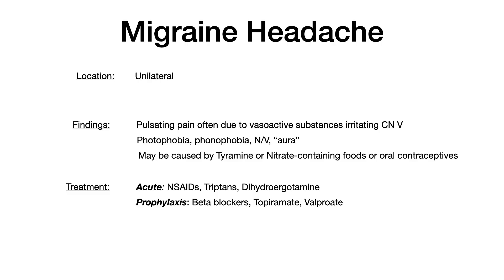Migraines may also be caused by consuming foods that contain either tyramine or nitrate — that's very high yield. On USMLE or COMLEX, they could describe someone eating specific foods, then having pain on one side of the head, with the answer being vasoactive irritation of cranial nerve 5. Oral contraceptives can also cause migraines. So migraines: unilateral pulsating, due to vasoactive irritation of cranial nerve 5, features photo and phonophobia, nausea, vomiting, and aura; may be triggered by tyramine or nitrate foods or oral contraceptives.